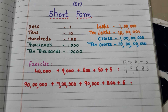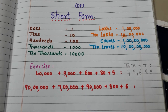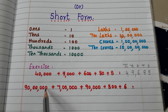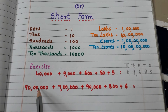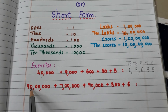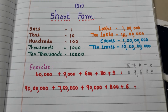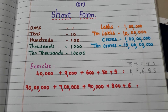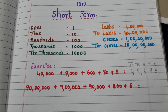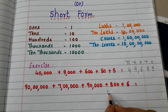Let us go to another example. Check for the highest number of zeros — one, two, three, four, five, six. Six zeros are there, so we have the number till ten lakhs. Write the places here.